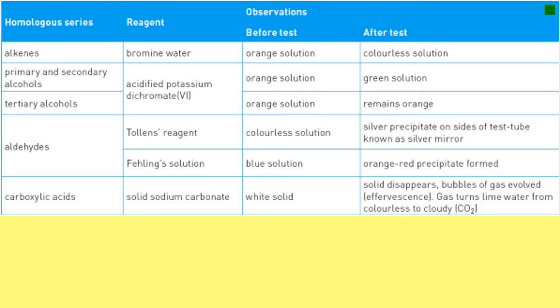For carboxylic acids, as with any acid — so it doesn't actually differentiate between carboxylic acids and mineral acids — you're going to add it to a carbonate, for example sodium carbonate. The carbonate is quite solid before it's reacted, but as it's dissolved by the acid the solid disappears and you get bubbles of carbon dioxide gas. We can prove that's carbon dioxide by bubbling the gas through lime water, because it turns the calcium hydroxide into calcium carbonate, which is a cloudy precipitate.